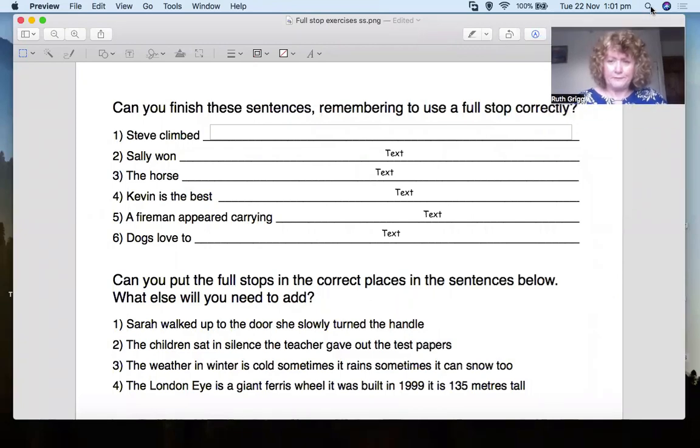So let's see if we can finish these sentences, shall we? With a full stop. Stephen climbed. Let's see, what could we put there? Stephen climbed to the top of the hill. And he felt exhausted. I've got a comma there. I don't want that comma there, do I? What do I want? Full stop. There you go.